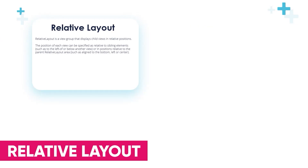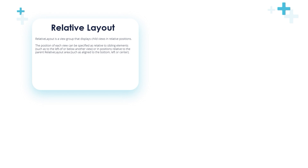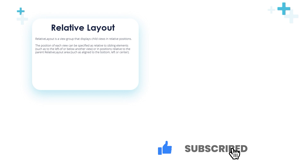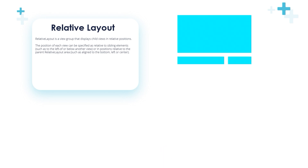RelativeLayout is a view group that displays child views in relative positions. The position of each view can be specified as relative to sibling elements, such as to the left of or below another view, or to the right of another view, and so on.